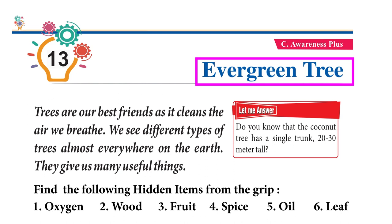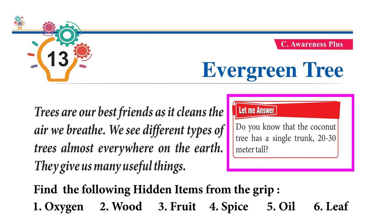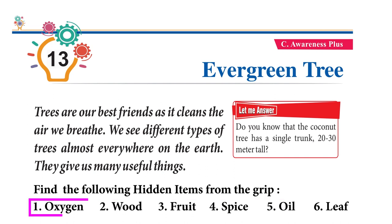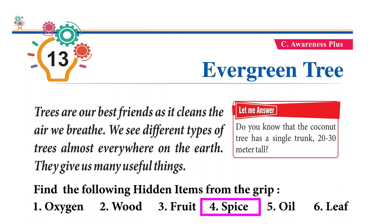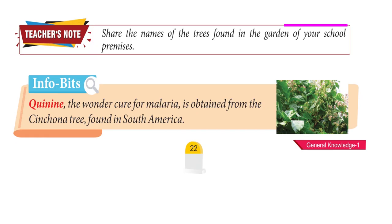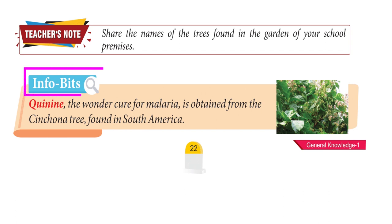Chapter 13: Evergreen Tree. Trees are our best friends as they clean the air we breathe. We see different types of trees almost everywhere on earth. They give us many useful things. Find the following hidden items from the grid: Oxygen, Wood, Fruit, Spice, Oil, Leaf. Teacher's Note: Share the names of the trees found in the garden of your school. Info Bits: Quinine, the wonder cure for malaria, is obtained from the cinchona tree found in South America.